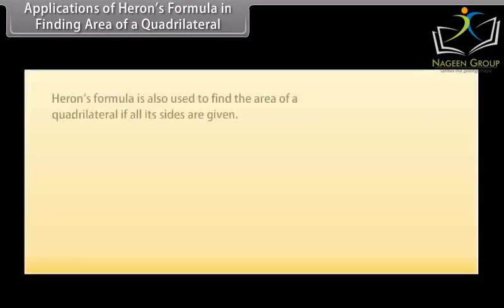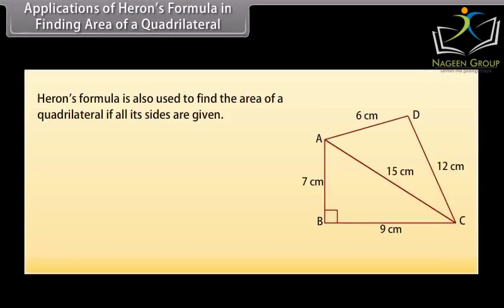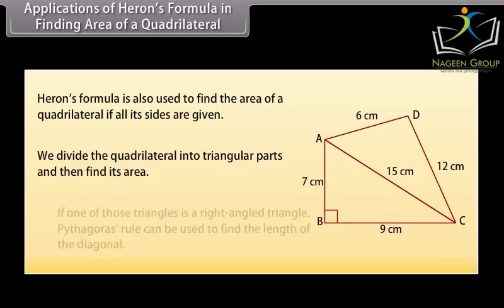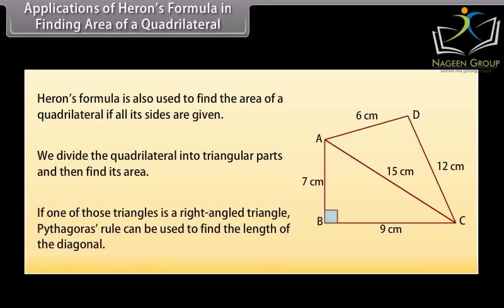Heron's formula is also used to find the area of a quadrilateral if all its sides are given. For that we divide the quadrilateral into triangular parts and then find its area. If one of those triangles is a right-angled triangle, Pythagoras' rule can be used to find the length of the diagonal.